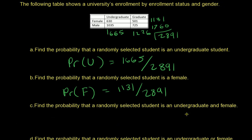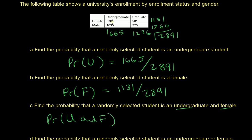Find the probability that a randomly selected student is undergraduate and female. How many are both undergraduate and female? That's 630 people. So the probability is 630/2891.